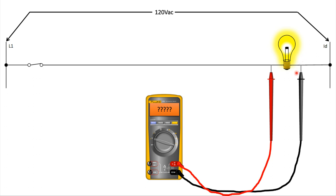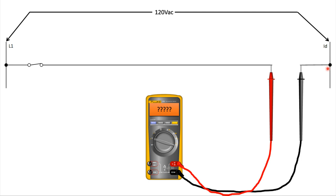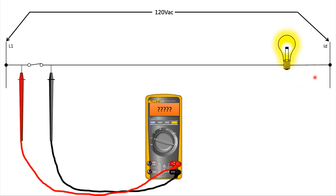So we close the switch and see 120 volts across the load. My red lead is at the same potential as line one, and my black lead is at the same potential as identified. But what happens if we remove the load? The red lead is still at line one potential and the black lead is still at identified, so we still read 120 volts. This gives us a window into the fact that a voltage reading on a load isn't always the best way to indicate that the load has failed — it reads 120 volts whether the load is there or not.